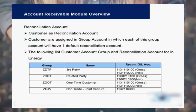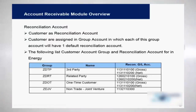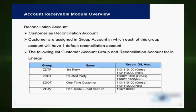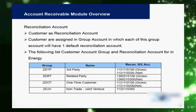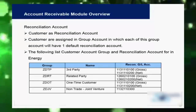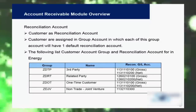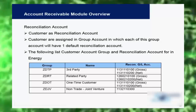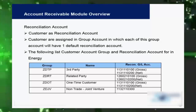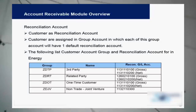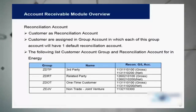As covered in accounts payable, a customer also has a reconciliation account. All customers are grouped into different categories — for example, third-party customers, intercompany customers, non-trade customers, or one-time customers. Once grouped into account groups, they have their respective reconciliation accounts. Reconciliation accounts are GL accounts that compile various customers into one GL account. So you can have 100 different third-party customers, but they will all be combined into one reconciliation GL account for accounting purposes.